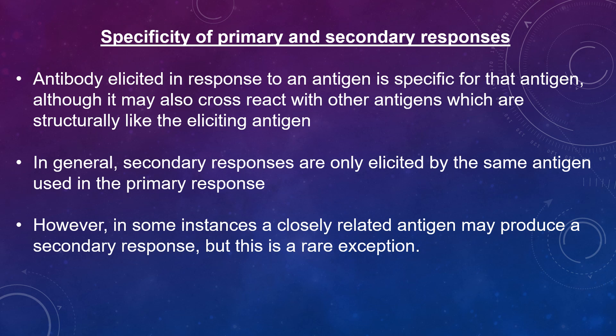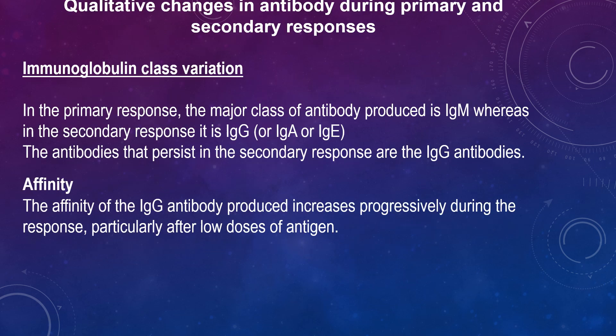However, in some instances a closely related antigen may produce a secondary response — this is a rare exception. There are also qualitative changes in antibodies during primary and secondary responses with respect to immunoglobulin class variation. In the primary response, the major class of antibody produced is IgM, whereas in the secondary response it is IgG, IgA, or IgE.